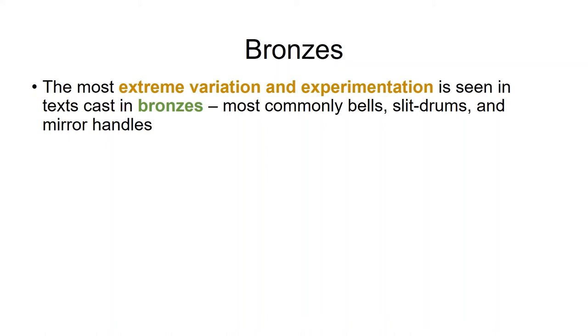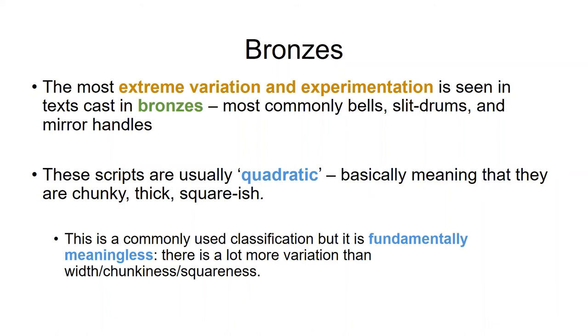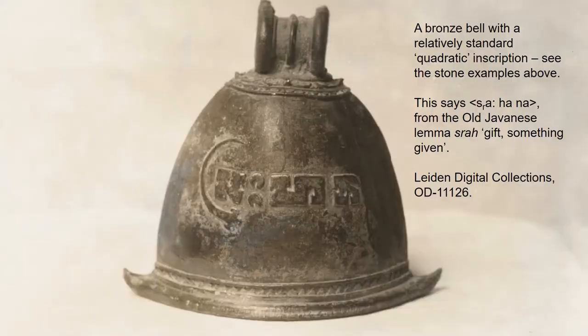Actually, the most extreme variation we see is in the bronzes — most commonly bells, slit drums, and mirror handles. These scripts are usually called quadratic, which is basically a sort of meaningless term as far as I'm concerned. This one actually is basically quadratic, very similar to the so-called quadratic scripts that you find on stones. It's a very simple little inscription — just one word: srahanan, probably from the Old Javanese root sra meaning gift, possibly a passive realis form but with a very strange spelling, so we don't really know exactly what it means.